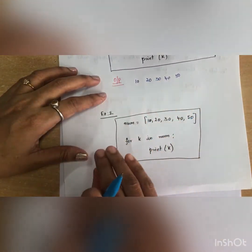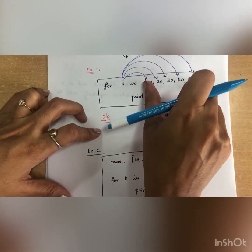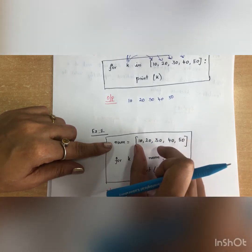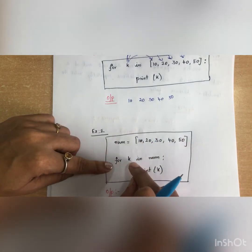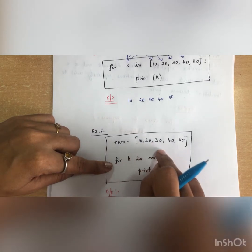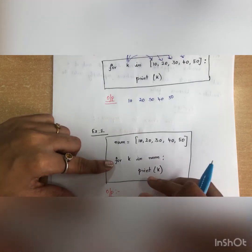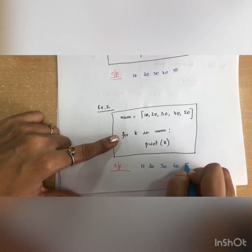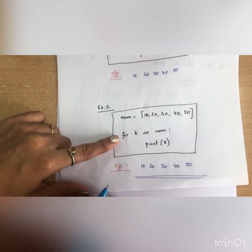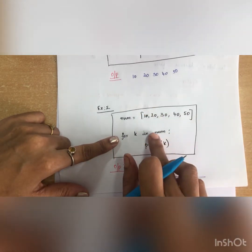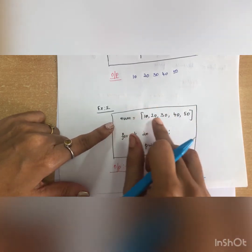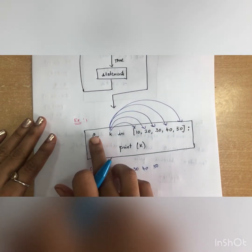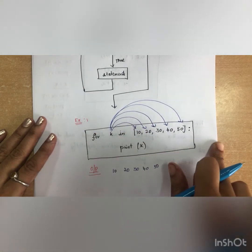Alternatively, you can store the list into a variable: num = [10, 20, 30, 40, 50], then for k in num: print(k). Both programs give the same output: 10, 20, 30, 40, 50. You can either give the list items directly inside the for loop or assign the values to a variable outside.